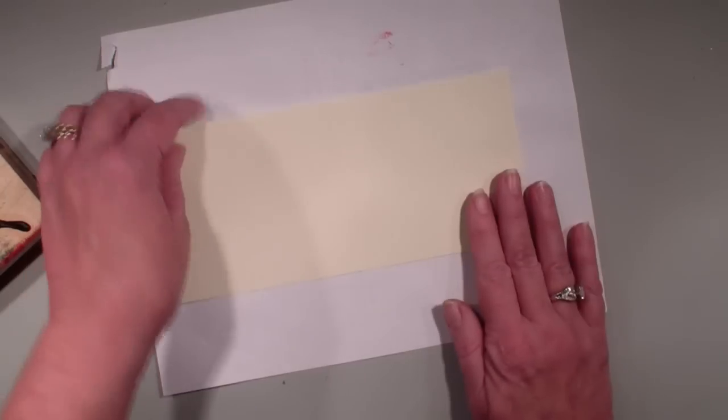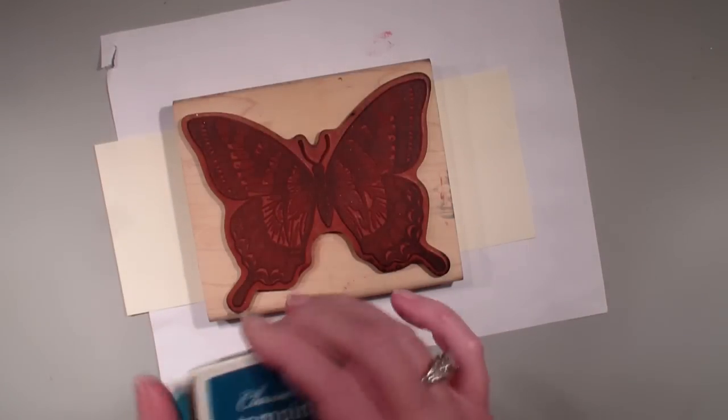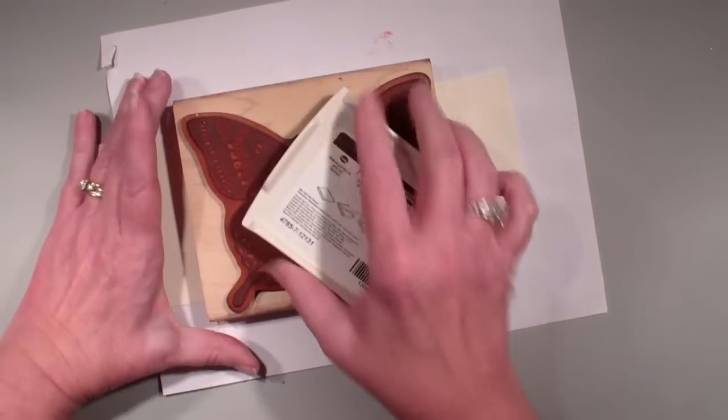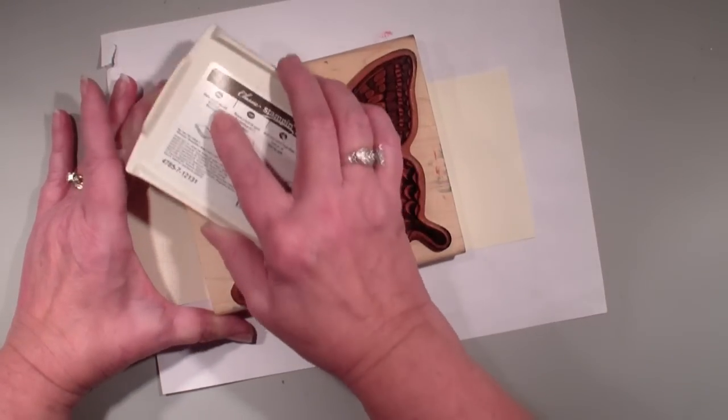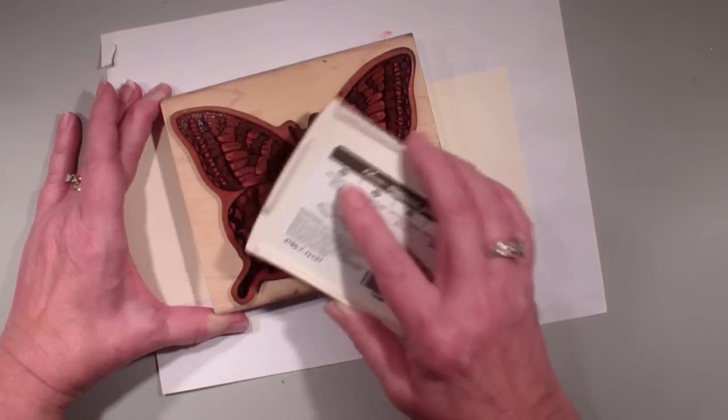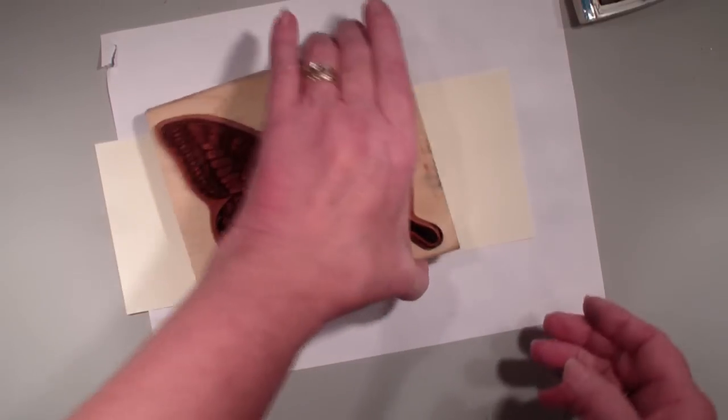going to bring this piece of cardstock in, going to take my Swallowtail using the Island Indigo ink. I'm going to ink that stamp up and then what I want to do is kind of stamp it at an angle